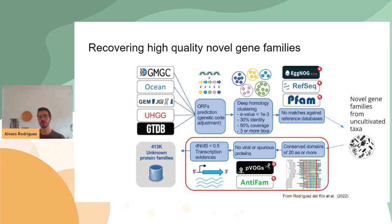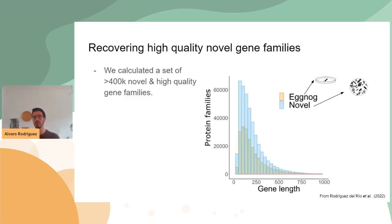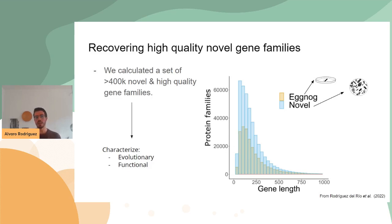After filtering, we ended up with a collection of more than 400,000 novel gene families — a huge number. For comparison, this is the gene length distribution of eggNOG, a database containing all gene families from cultivated species, and this is the gene length distribution of the novel gene families we identified here. As you can see, we have almost twice the size of the gene families in eggNOG, representing a very large number of unknown genes from uncultivated species.